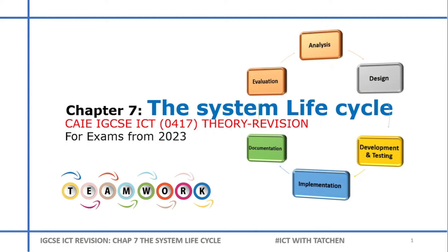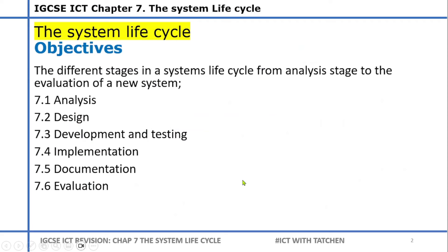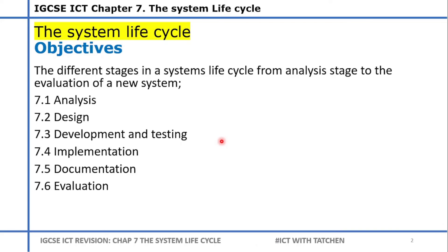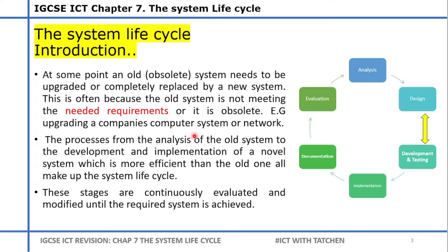Hello everyone, welcome back to this IGCSE tutorial session. Today we'll be talking about the system life cycle as chapter 7. The objectives for this chapter are to look at the different stages in the development or life cycle of any system. We will start with analysis, go to design, development, implementation, documentation, and finally evaluation.